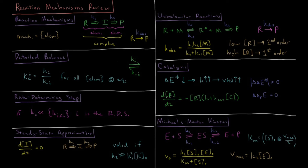When a catalyst is present, the rate expression for the change in reactant concentration over time is equal to minus the reactant concentration times the rate constant without the catalyst, plus the catalyst rate constant Kcat times the concentration of the catalyst.